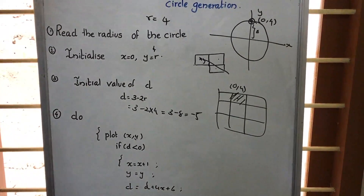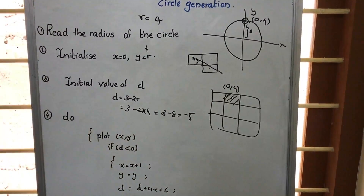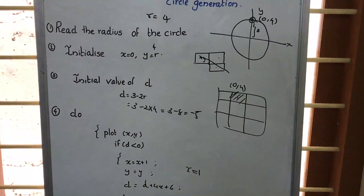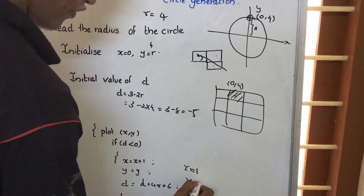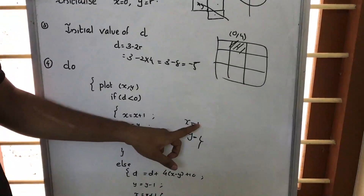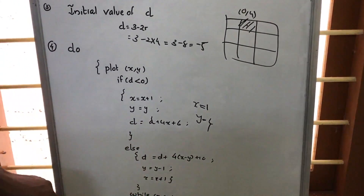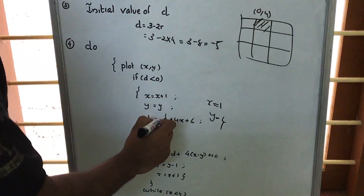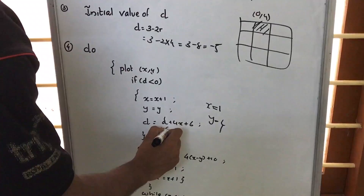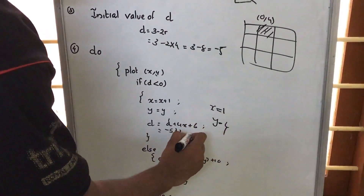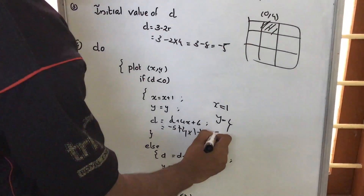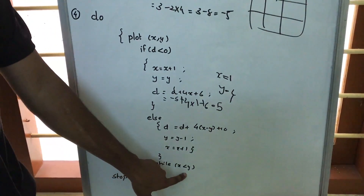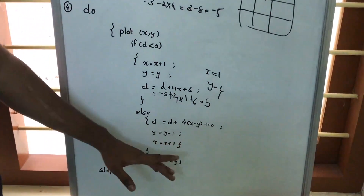x is equal to x plus 1. The new x is x plus 1; previously x was 0, so new x is 1. And y is equal to y, so y keeps the previous value, that is y equal to 4. Now we have x equal to 1, y equal to 4. Then the new d is equal to d plus 4x plus 6. Previously d was minus 5, so minus 5 plus 4 into 1 plus 6, that is equal to 5. Now d is equal to 5. Checking x less than y: x is 1, y is 4, so yes, x is less than y — we enter the do loop again.